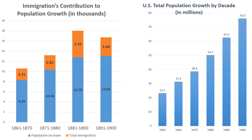The population of the United States grew drastically in the second half of the 19th century. As you can see in the graph on the right, the population tripled in 50 years, growing from 23.2 million in 1850 to 76 million by 1900.